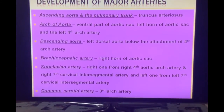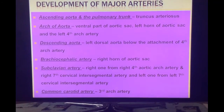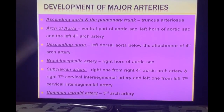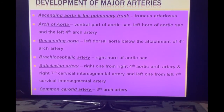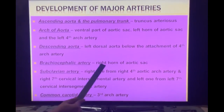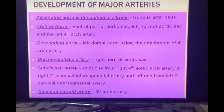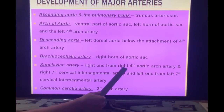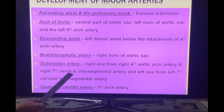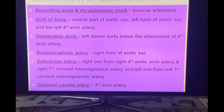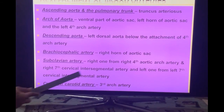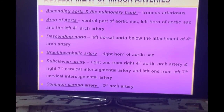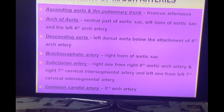The brachiocephalic trunk — which is a branch of the arch of aorta — arises from the right horn of the aortic sac, and then divides into the right subclavian and right common carotid. The left horn contributes to the arch of aorta. The right subclavian artery arises from the right fourth aortic arch along with the right seventh cervical intersegmental artery, while the left subclavian arises from the left seventh cervical intersegmental artery only, since the left fourth aortic arch contributes to the arch of aorta. The common carotid artery arises from the third arch artery. This completes the development of major arteries.